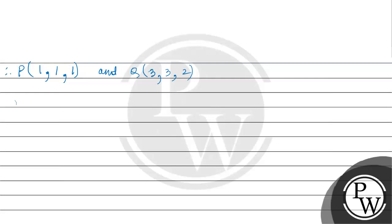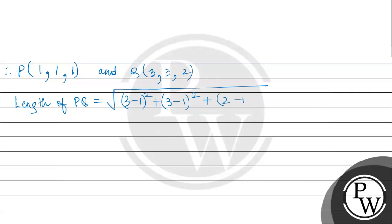So the length of BQ equals under root of (3 minus 1) squared plus (3 minus 1) squared plus (2 minus 1) squared, which equals under root of 4 plus 4 plus 1 equals 3.